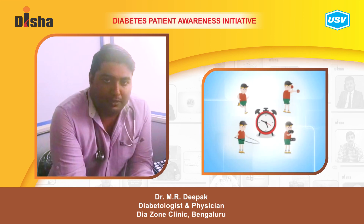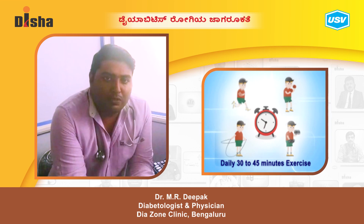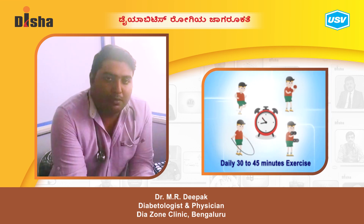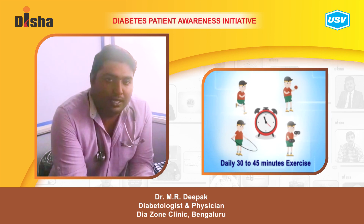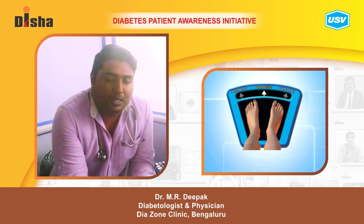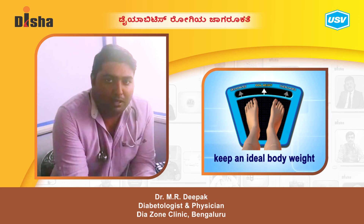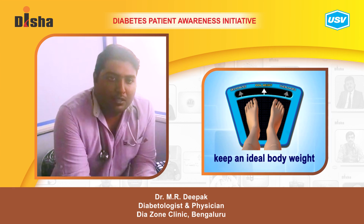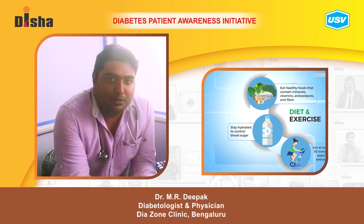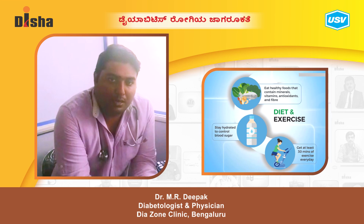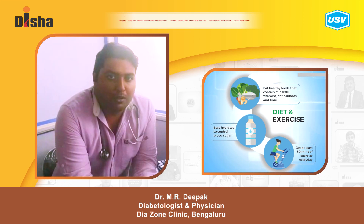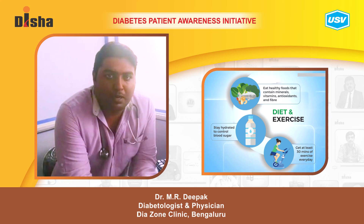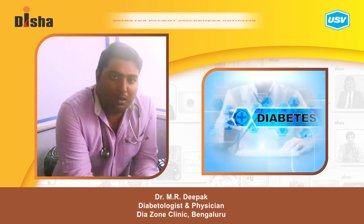Physical activity daily — at least 30 to 45 minutes of physical activity, a simple brisk walk, minimum at least 5 days a week. Maintain your ideal body weight. These are the basic principles — you can prevent diabetes and keep your diabetes stable and controlled.